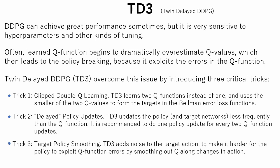The third is target policy smoothing. TD3 adds noise to the target action, to make it harder for the policy to exploit Q function errors by smoothing out Q along changes in action.